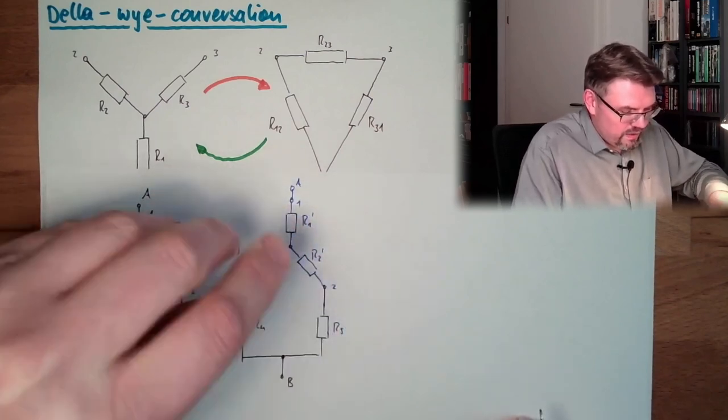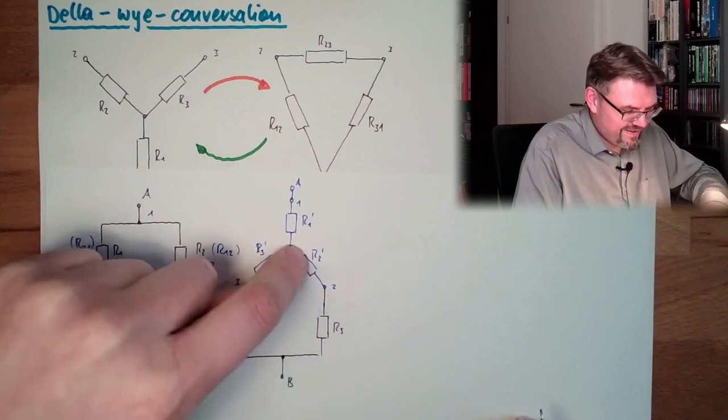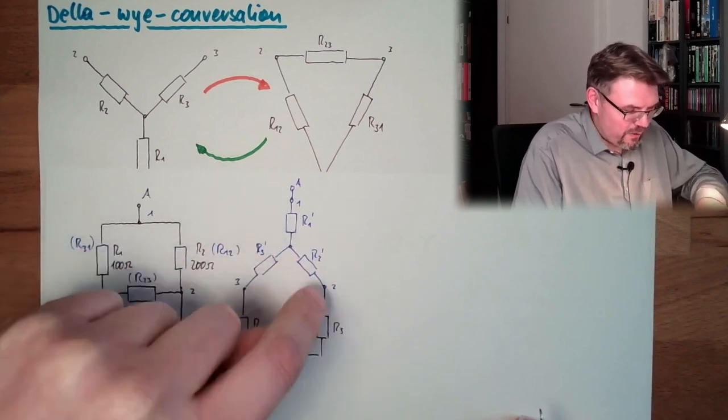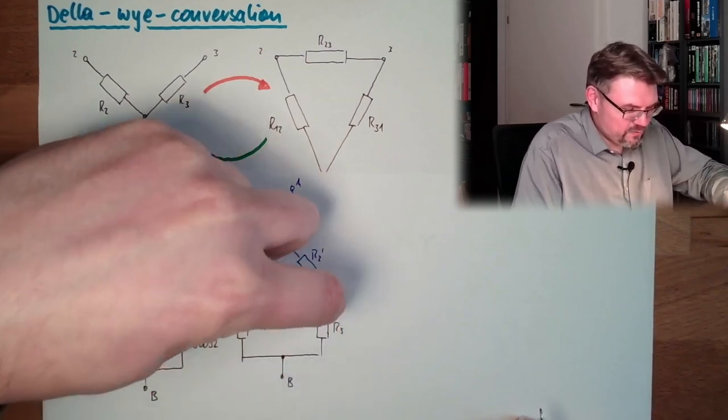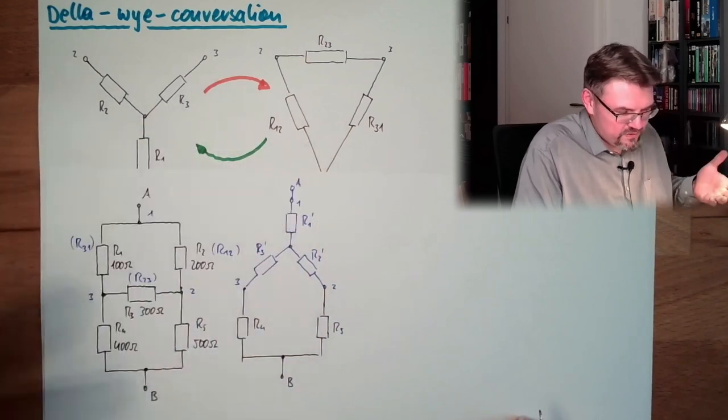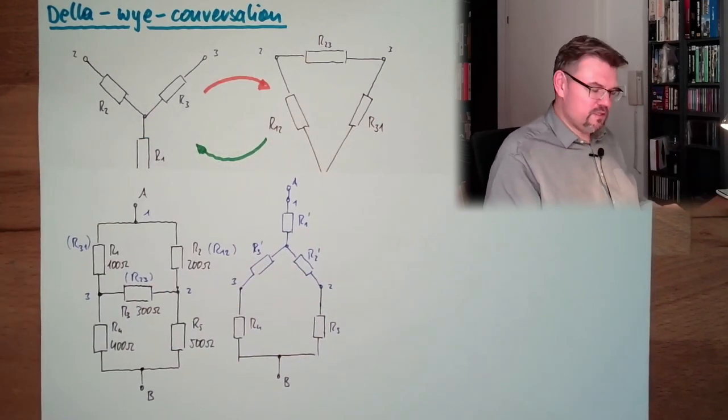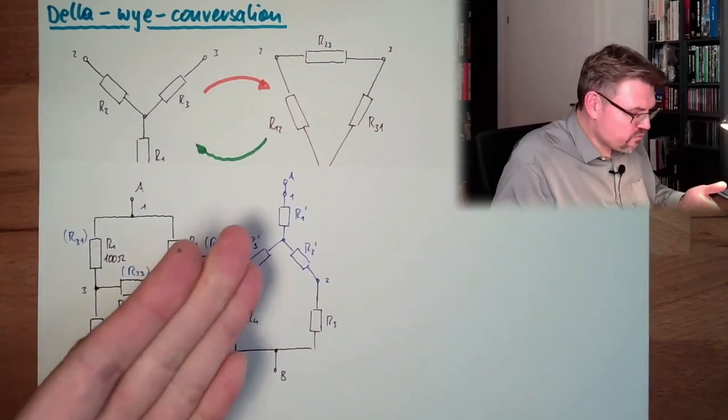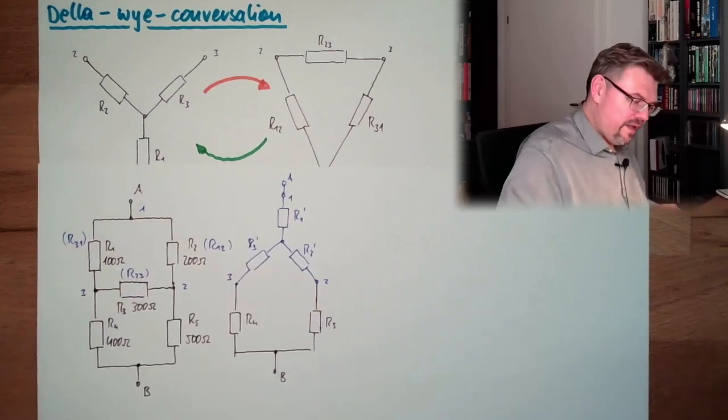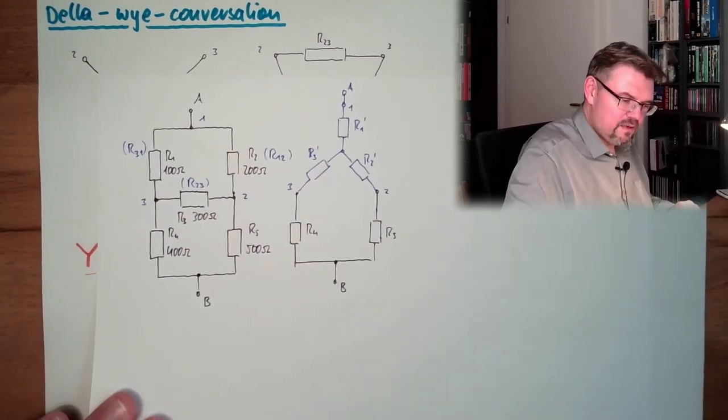Then those are in series, those are in series, then those two branches are parallel, and then it's a series connection. This is pretty straightforward. So let's try to calculate this. Let's start, try to get this.